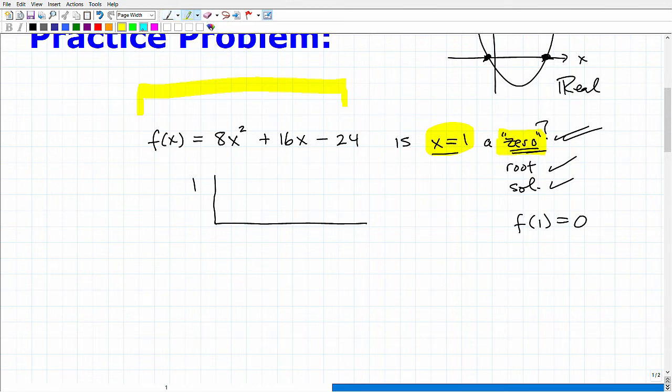So synthetic division is where we take the coefficients, as long as this thing is written in standard form, we're going to take the coefficients here. So this is going to be 8, 16, and negative 24. You write them like so, as long as this is in standard form, and if you're missing something, you'd plug in a 0. I'm really going super fast as far as the overview of synthetic division.